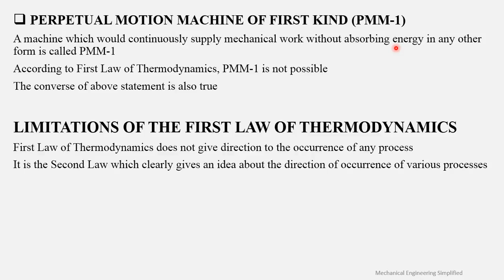In later lectures you will encounter PMM2 and PMM3 — please do not mix them up, as they are all different. According to the first law — the law of conservation of energy — energy cannot be created or destroyed. PMM1 would require creating energy, which is impossible. The converse is also true: work given as input cannot accumulate in a system without any energy transfer in another form.